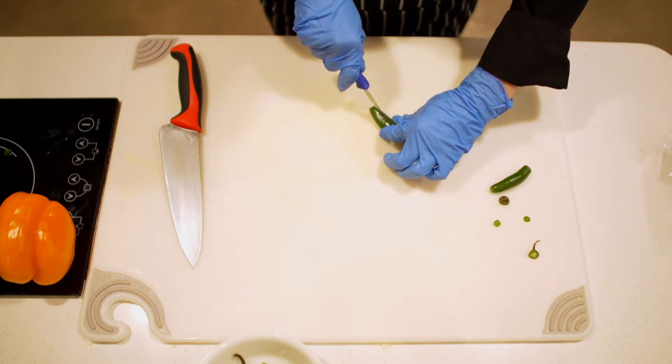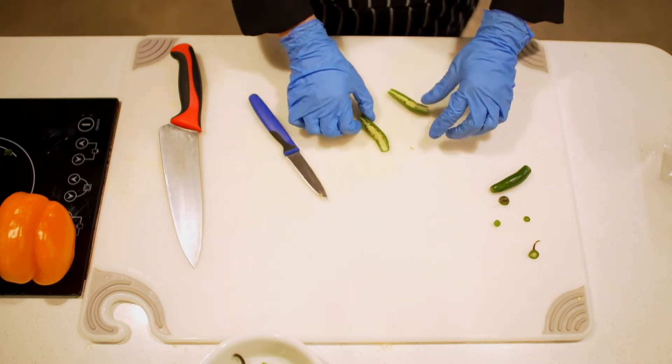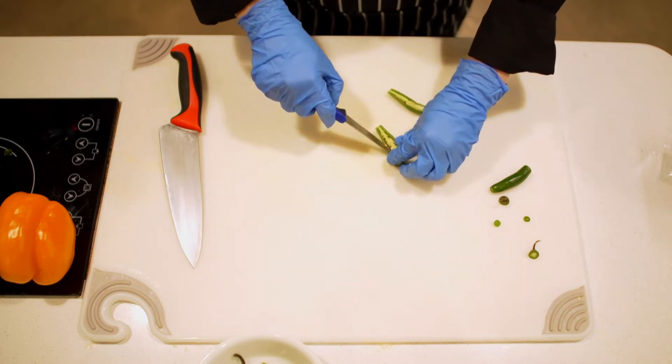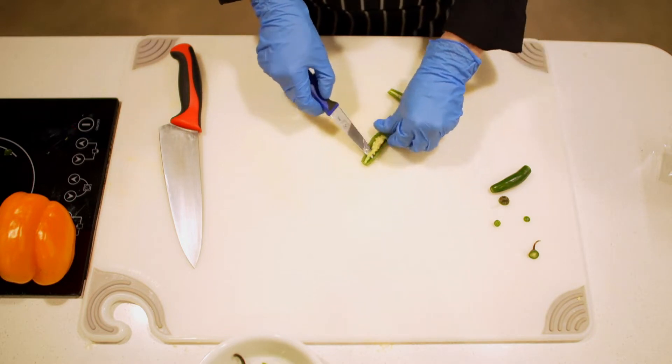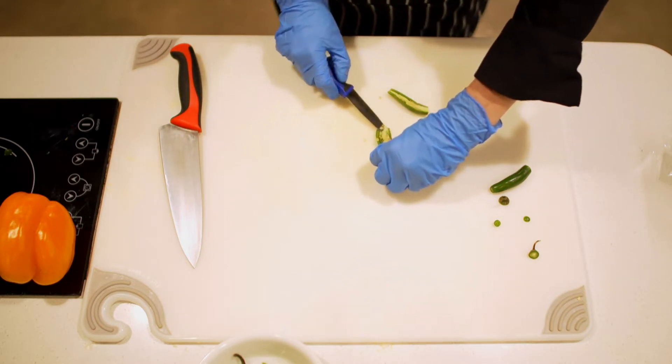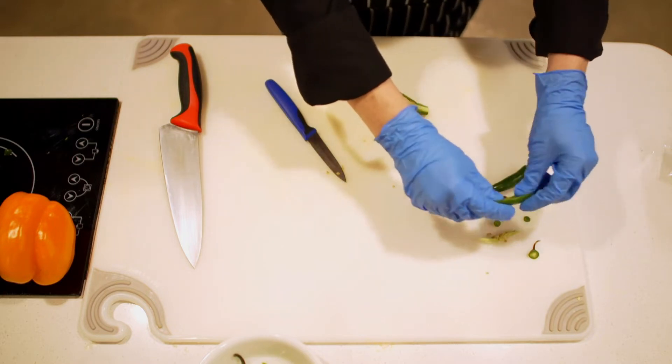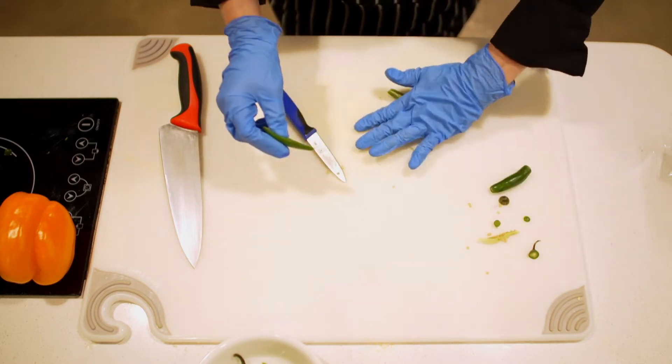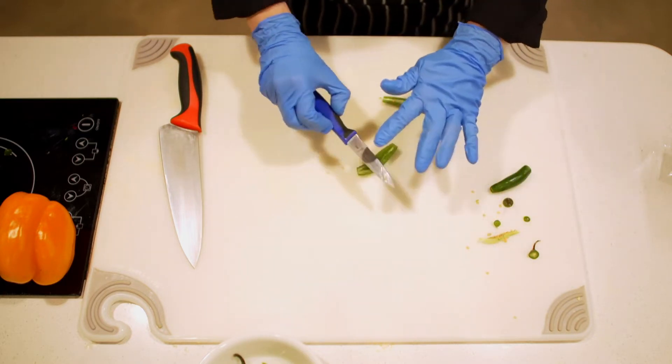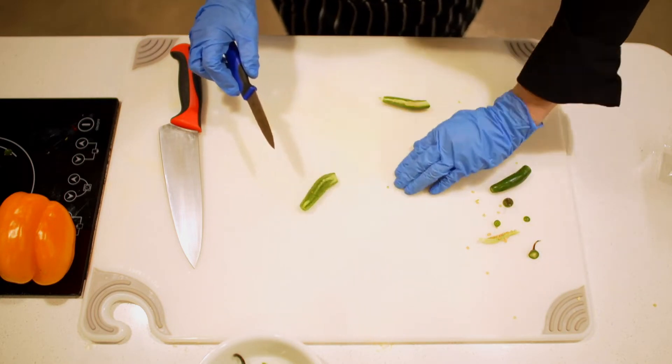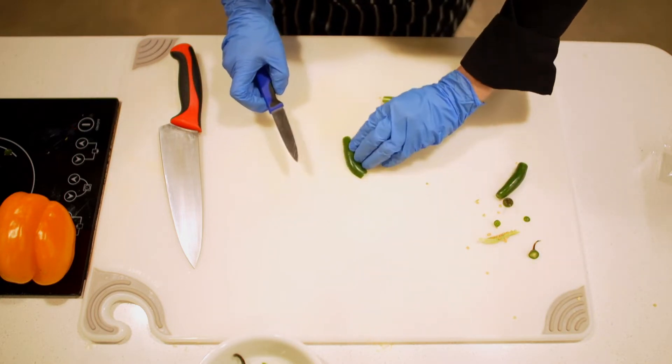You can do a couple of things with it. I do like to cut this rib out if I'm looking to reduce the heat a little bit, because that is going to be where the spice is located—in that rib and on those seeds.